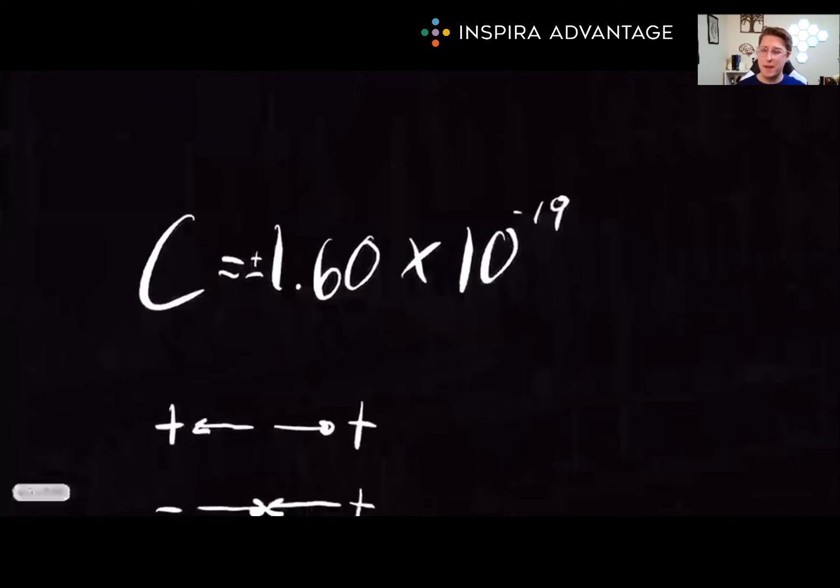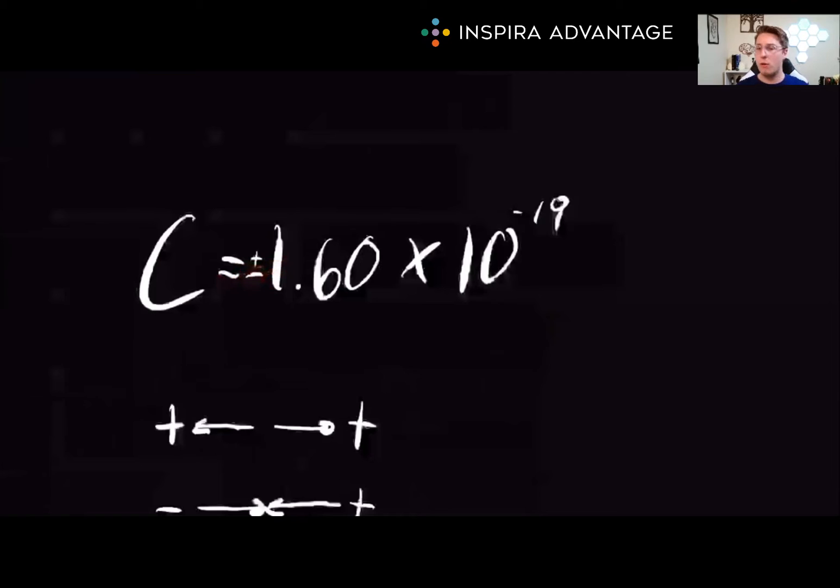First things first, the fundamental unit of electric charge is the coulomb. Protons and electrons, the tiny particles inside an atom, carry this charge. Protons have a positive charge, and electrons have a negative charge. Both possess the fundamental unit of charge, which is approximately 1.6 times 10 to the negative 19 coulombs. But remember, despite having the same magnitude of charge, protons and electrons differ greatly in mass.